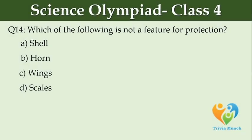Which of the following is not a feature for protection? Option A: shell, Option B: horn, Option C: rings, Option D: scales.